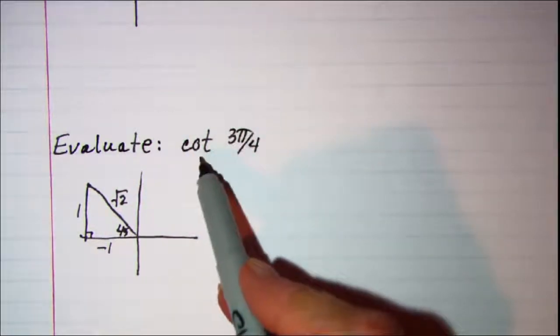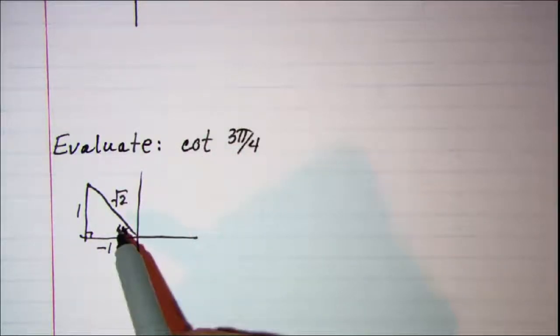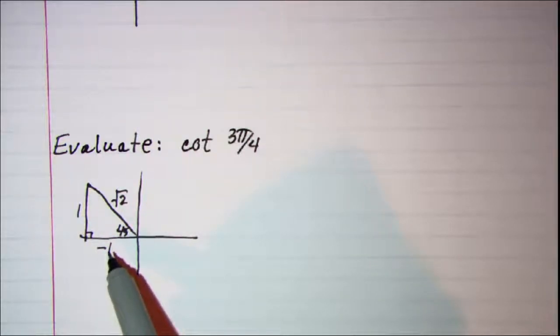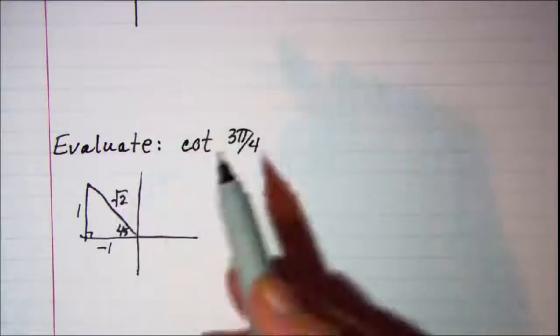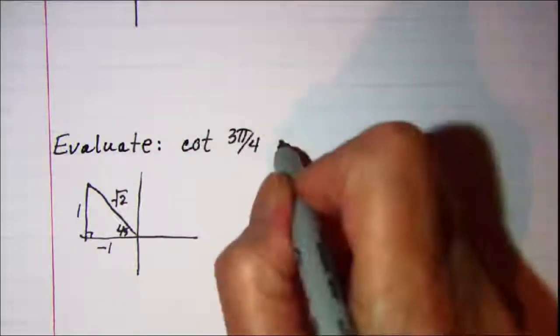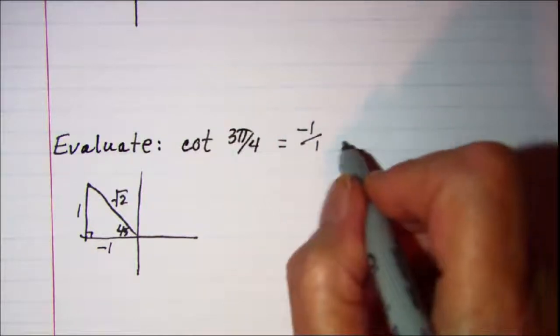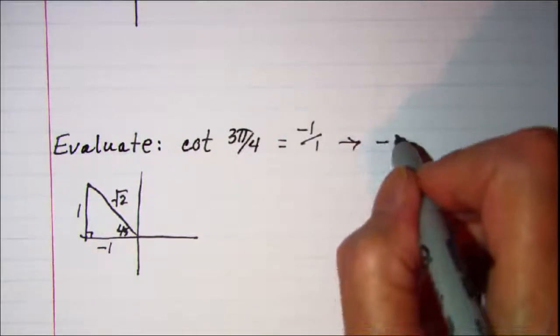Now cotangent is the reciprocal of tangent. The tangent of this reference angle is positive 1 over negative 1. So if I flip that upside down and do the reciprocal then this is going to be a negative 1 over a positive 1 which is just a negative 1.